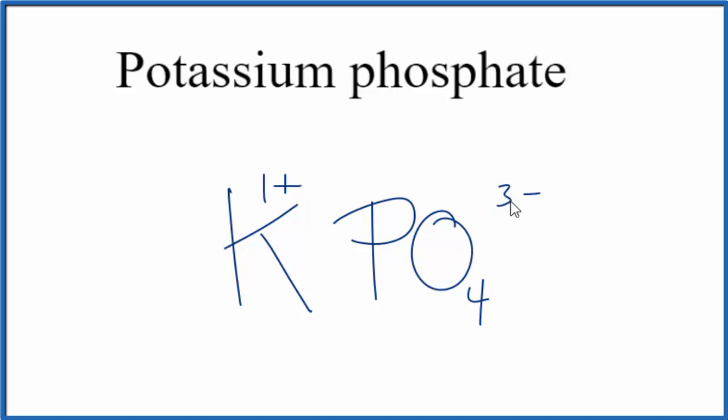It's called the crisscross method. We can take the 3, move it down here, and then the 1 over here. We don't write the 1 by convention, so this is the formula for potassium phosphate.